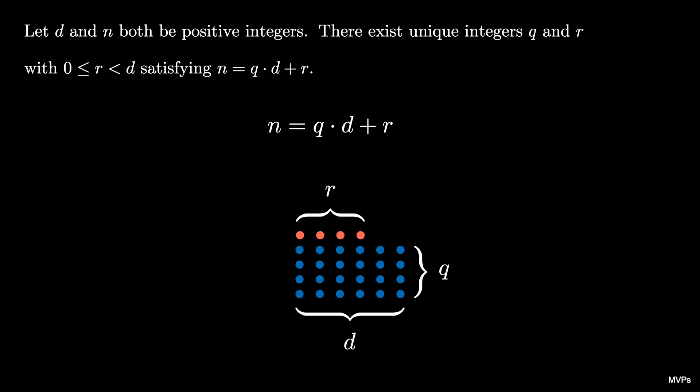To prove the uniqueness of the pair q and r let's imagine that we have another pair q prime and r prime satisfying the same conditions.